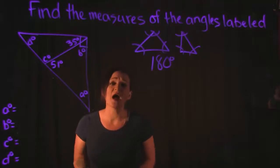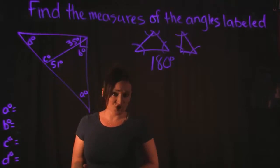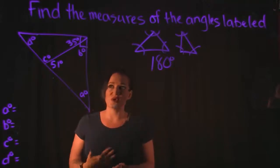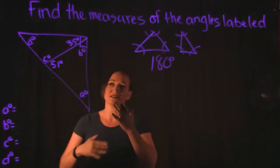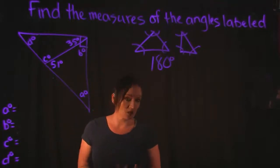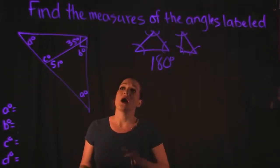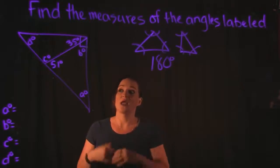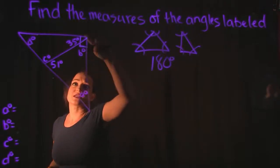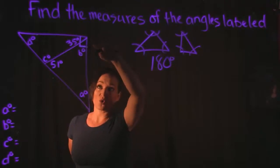When it comes to geometry, you never want to assume things based on what a figure looks like. You need to go based off what the problem gives you — any symbols or markings shown on the triangle. For our particular example, they did give us a small square in one corner of the triangle.